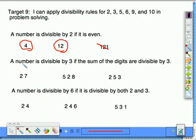A number is divisible by 3 if the sum of the digits are divisible by 3. 27. When we check 27, we're going to take 2 plus 7 and get 9. Since 9 is divisible by 3, 27 is divisible by 3.